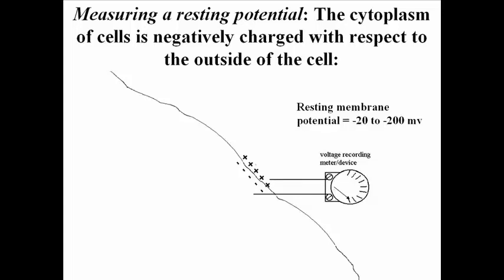The resting potential ranges from about minus 20 to minus 200 millivolts. This will depend on cell type. Most cells have a resting potential around minus 70 to minus 80 millivolts.